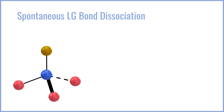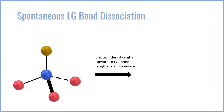For example, if we have this tetrahedral intermediate here, what will happen is that the electron density from the carbon-leaving group bond will start to spontaneously shift upwards towards the leaving group. This is because thermodynamically, the leaving group is stable enough with negative charge density to be on its own.